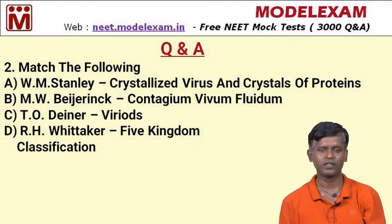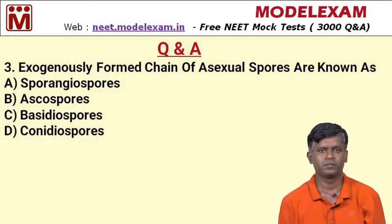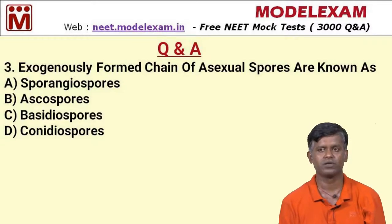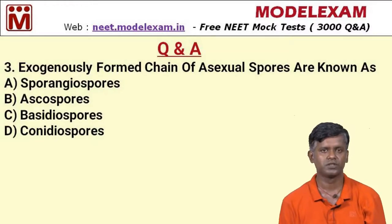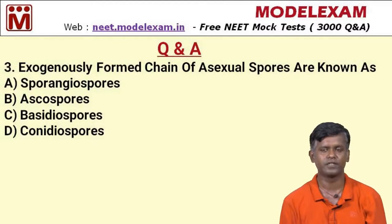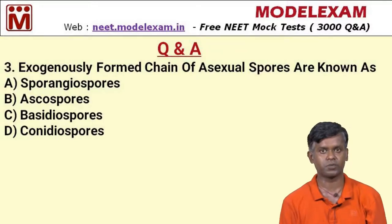So for question two, all the statements are true and all matches are correct. Question number three: exogenously formed chains of asexual spores are known as — option A: sporangiospores, option B: ascospores, option C: basidiospores, option D: conidiospores. This is a direct question, and the answer is option D — conidiospores are the exogenously formed chains of asexual spores.